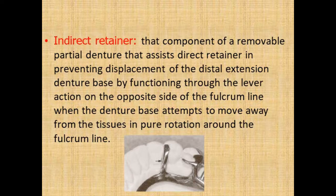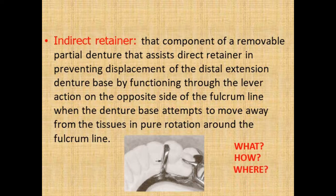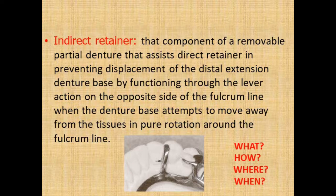To memorize this lengthy definition, split it into key questions. What is an indirect retainer? It is that component of a removable partial denture that assists the direct retainer to prevent displacement. How? By lever action. Where is it located? On the opposite side of the fulcrum line. When does it function? When the denture base attempts to move away from the tissue.